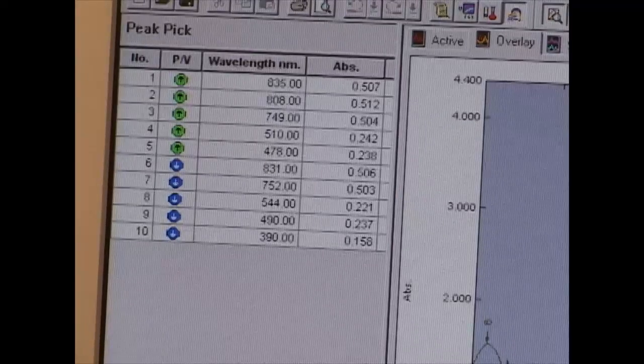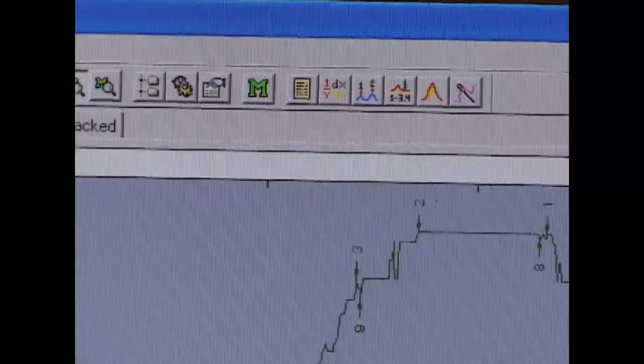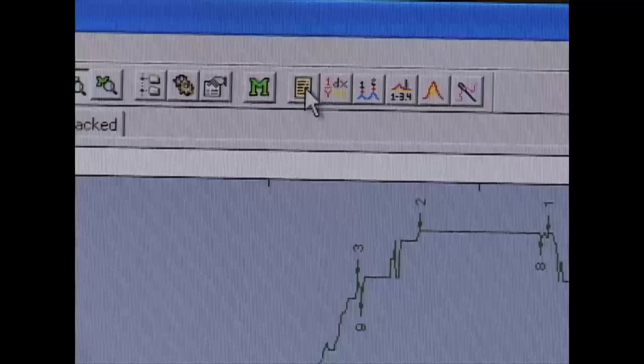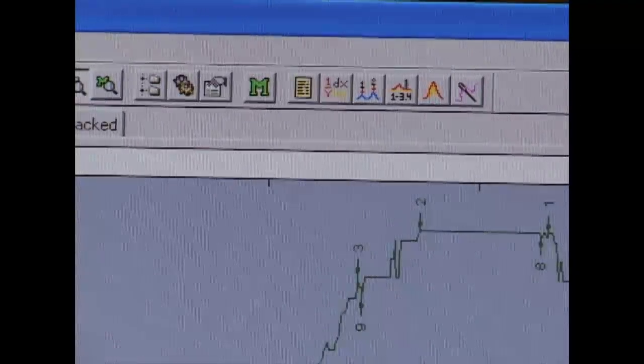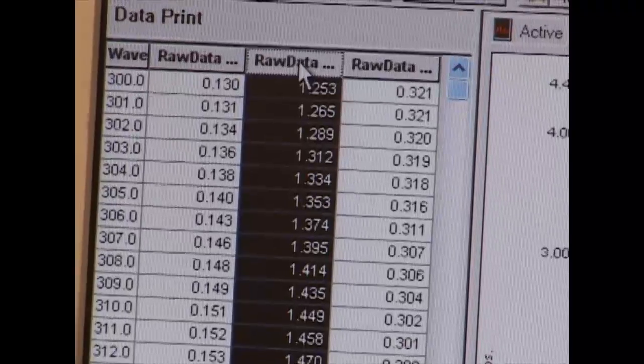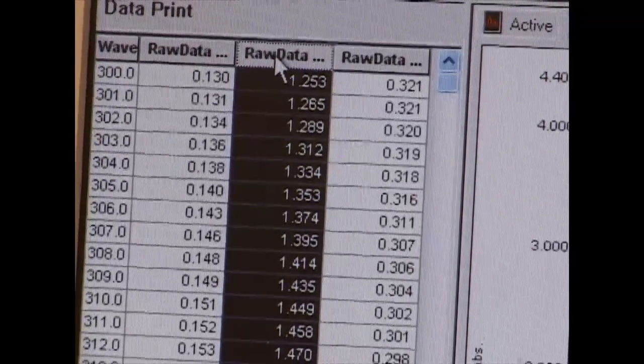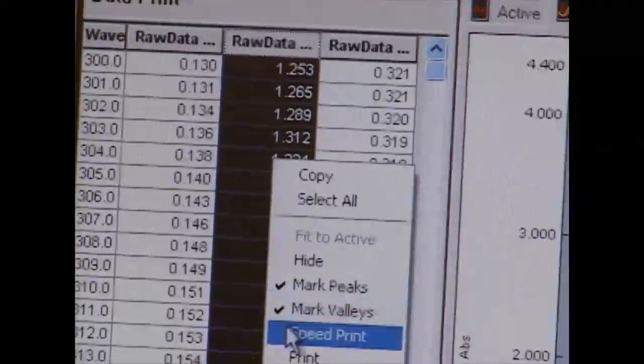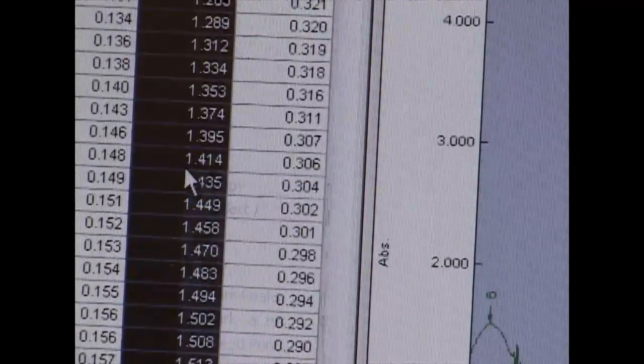If you want to select a different spectrum, you need to press data print and press a different data row. And then you can unselect marked peaks, marked valleys.